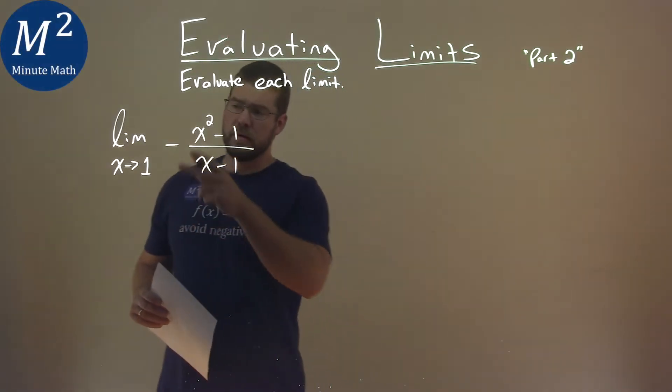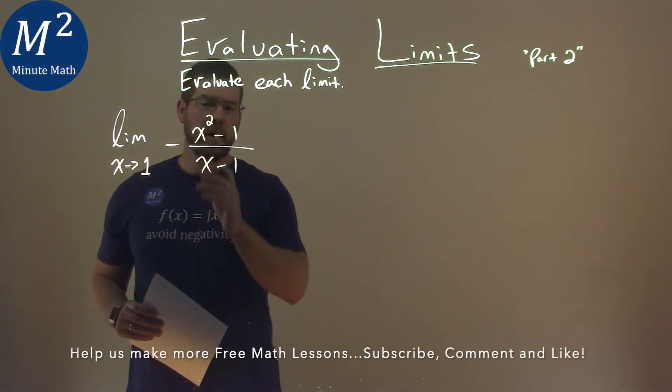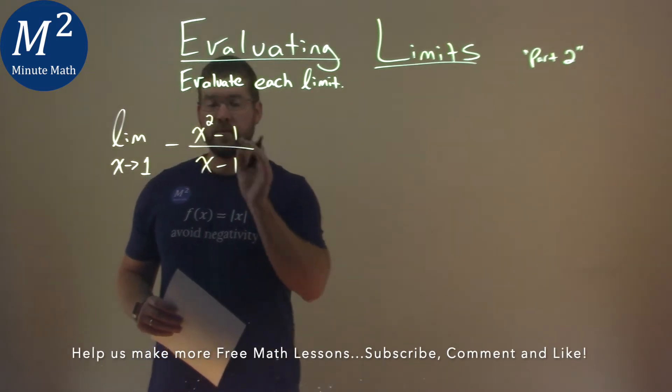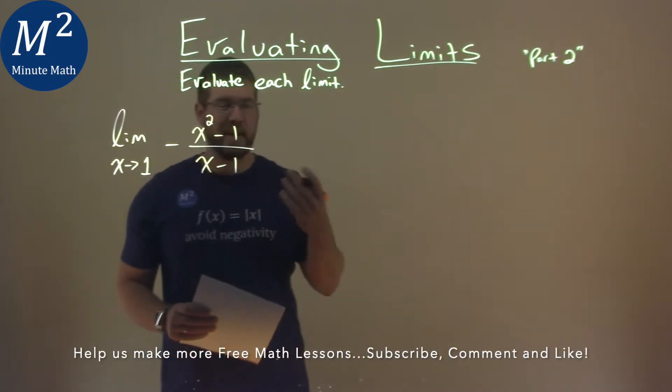We're given this problem right here. The limit as x approaches 1 of negative x squared minus 1 over x minus 1. Again, we're finding this limit.